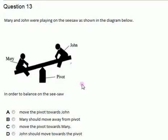In order for this seesaw to balance, you are asked what should be done. There are several things that can be done, and what can be done in this case will be determined by the distance between where the pivot is and where John is, or from where the pivot is to where Mary is.